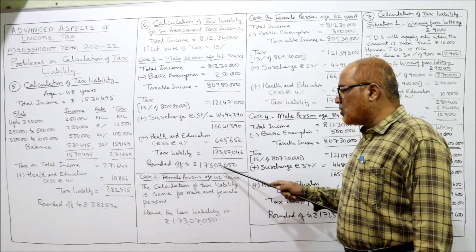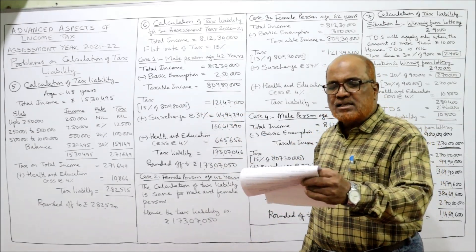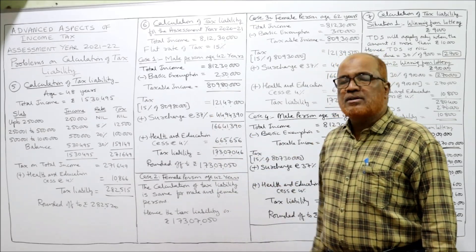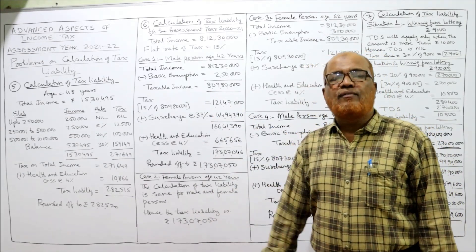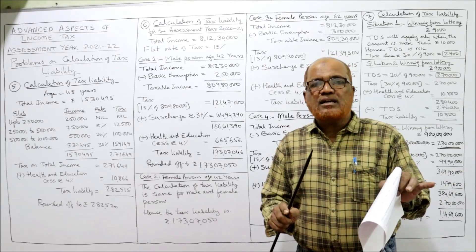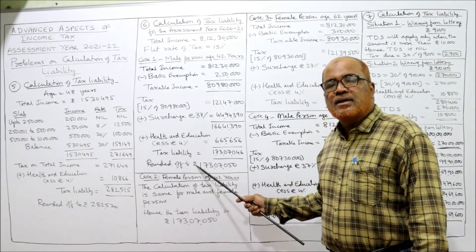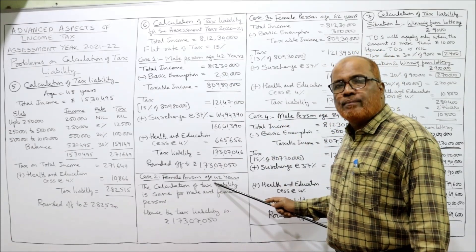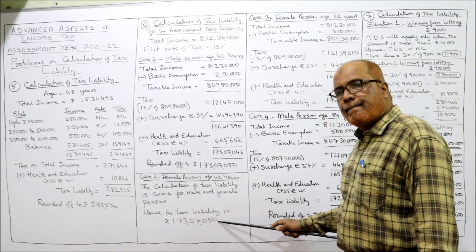Case 2: if the SSC is a female person aged 42 years. The Income Tax Act says there is no difference between male and female SSC — both tax provisions and tax rates are the same. Since both are of the same age, 42 years, the tax liability will be one crore seventy-three lakh seven hundred fifty, same as Case 1.